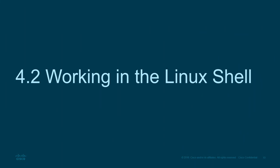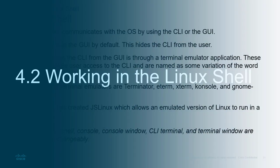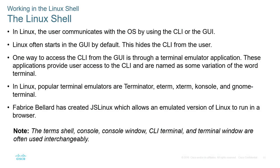Now let's look at Linux in the shell environment. The Linux shell provides the ability to work through a terminal to interact with the operating system. You can also have a GUI, but it depends on what you're looking for. One way to access the terminal or CLI is through a terminal emulator. In Linux we don't have a single terminal — we have multiple terminal emulators including the Terminator, Eterm, Xterm, Console, and GNOME Terminal.